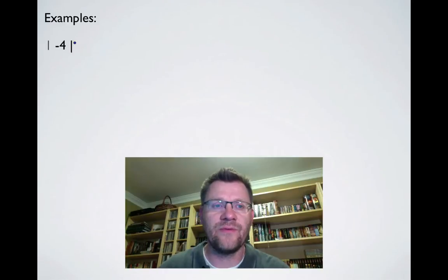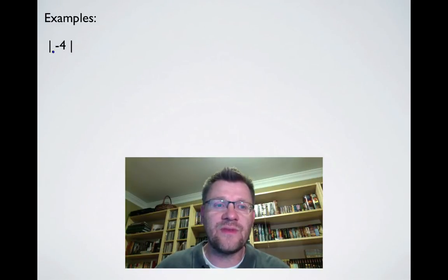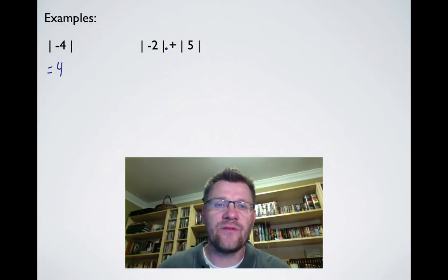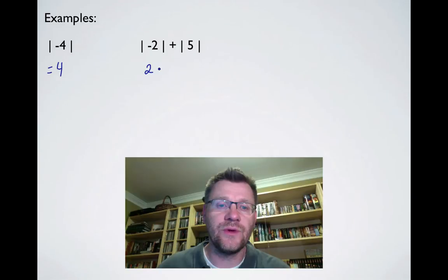A couple of examples: the absolute value of negative 4 — the absolute value signs mean whatever value is inside has to become positive, so it's just 4. If we have the absolute value of negative 2 plus the absolute value of 5, the absolute value of negative 2 is 2, and the absolute value of 5 is still 5, giving us 7.